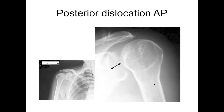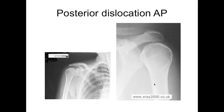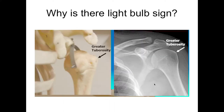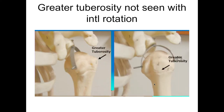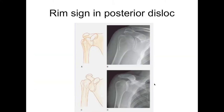They hold their arm in internal rotation and can't externally rotate it. There's the light bulb sign — it's internally rotated, so you don't see the greater tuberosity. Here's normal: it's got this rounder greater tuberosity shape. When it's internally rotated because it's posteriorly dislocated, the greater tuberosity is not seen. Here's normal, and now it's turned inward — you get this light bulb sign.